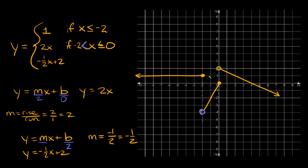This equation is valid from zero all the way towards positive infinity — it basically goes forever in that direction. So we can say y is equal to negative one half x plus two is valid if x is greater than zero, since x equals zero is right here and we want all values bigger than zero along the x-axis.